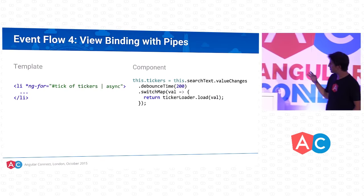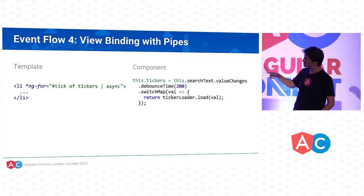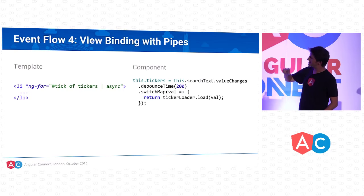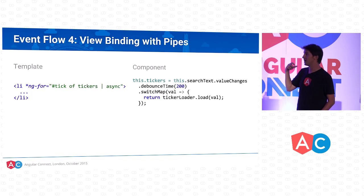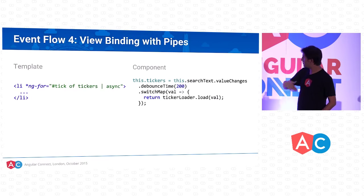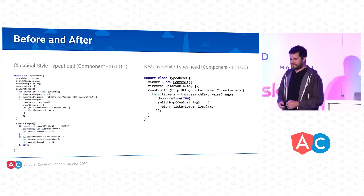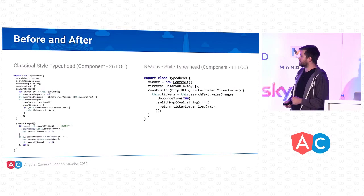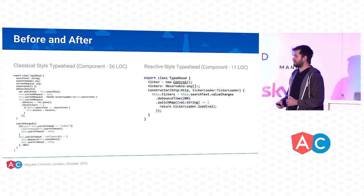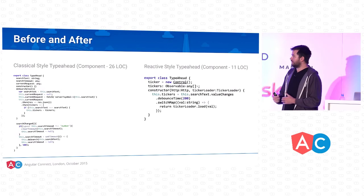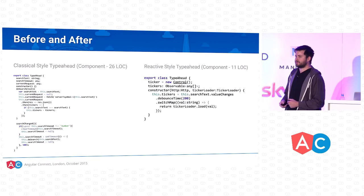This covers the third step in our three-step process. We've taken the value from the view, debounced it, mapped it into a request and response, and instead of subscribing in the component, we assign it to this.tickers and pipe it through the async pipe in the template — which subscribes inside the pipe and unsubscribes when the pipe disappears. Any time a new value comes, it renders automatically. If we look at the before and after, we reduced lines of code from 26 to 11 and reduced all the logic to a single function.